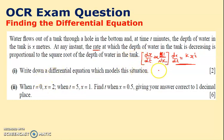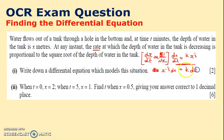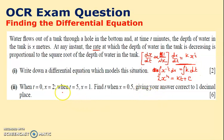Separating variables: x^(−1/2) dx equals k dt. Integrating both sides: adding one to the power gives x^(1/2) divided by one half, which is 2√x, equals kt plus constant C. So I have 2√x equals kt plus C, and I need to find two constants.